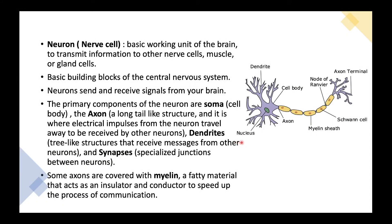What is a neuron? A neuron, also known as a nerve cell, is a basic working unit of the brain that transmits information to other nerve cells, muscles, or gland cells. Neurons are responsible for sending and receiving signals from your brain.